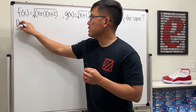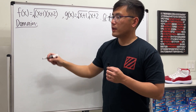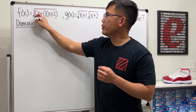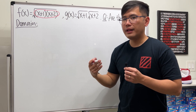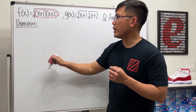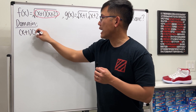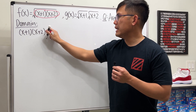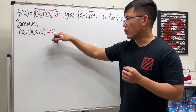Let's observe the domain of f first. We have one square root, which means we need the inside to be greater than or equal to zero — that's the criteria when dealing with a square root. So we need (x+1)(x+2) ≥ 0, making sure these two factors multiplying together end up positive or zero.